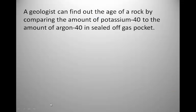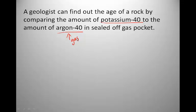Geologists can find out the age of a rock by comparing the amount of potassium-40 to the amount of argon-40, its daughter isotope, in a sealed-off gas pocket of rock. When rock forms, it's a molten material and the amount of potassium-40 is pretty constant. But as it cools, the potassium-40 gets sealed off in a little air pocket and begins to decay into the gas argon-40. A geologist can find out the age of a rock by comparing the ratio of potassium-40 to argon-40 in this sealed-off gas pocket.